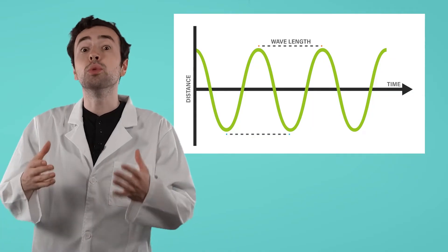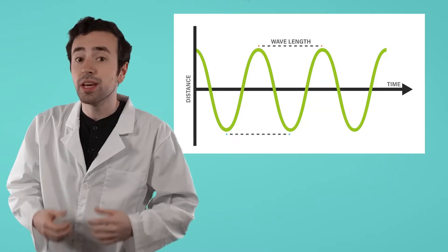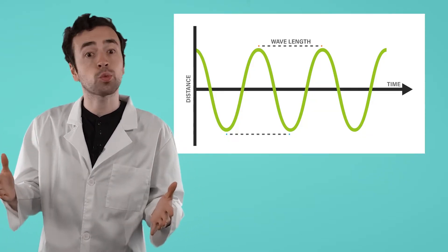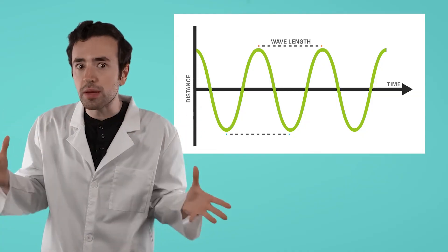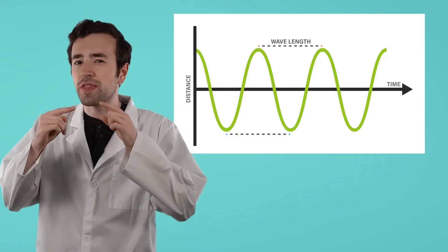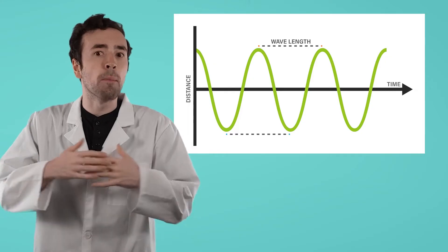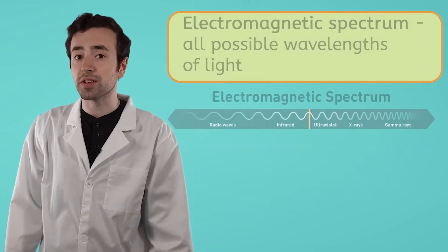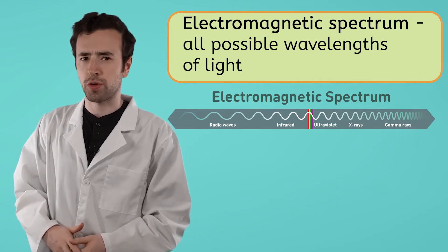Light energy moves as a wave. That means, just like sound, different types of light have different wavelengths, which range from very, very short to extremely long. We're talking wavelengths even smaller than the width of an atom to wavelengths that are miles long. All the possible wavelengths of light together are called the electromagnetic spectrum.